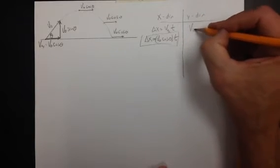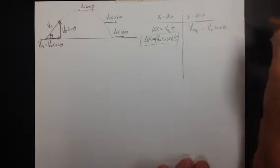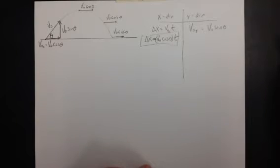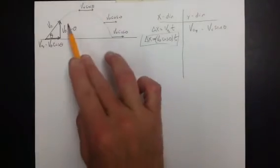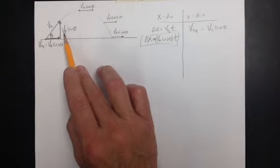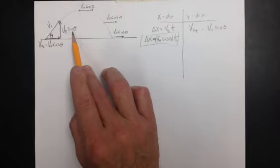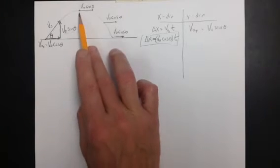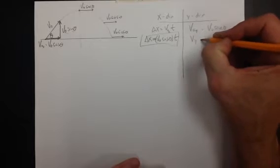In the Y direction, the initial velocity is going to be V-naught times the sine of theta. An easy way to solve a symmetrical problem like this is to cut the problem in half. At the very top of the path, the final velocity in the Y direction will be zero. Initially it's launched with V-naught sine of theta, and the acceleration of gravity changes that vertical velocity so that at the very top, the vertical velocity is zero.